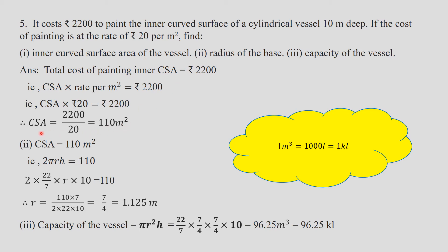Now, using the curved surface area formula: 2 pi r h = 110. Height of the vessel is 10 meters. Substituting: 2 into 22/7 into r into 10 = 110. Solving, radius = 7/4 = 1.75 meters, or approximately 1.125 meters.